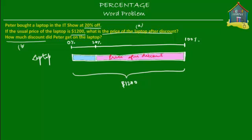This pink part is the price after discount, and this is what question A is asking you to find. And the blue part is the discount that he got — this is question B: how much discount did Peter get on the laptop? So two things we have to find out: one is how much discount he got, and second, the price after the discount.